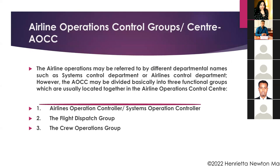Airline operations may be referred to by different departmental names — such as Systems Control Department or Airlines Control Department. However, the AOCC is basically divided into three functional groups, which are usually located together in the airline operations control center: the airlines operations controller, the flight dispatch group, and the crew operations group.